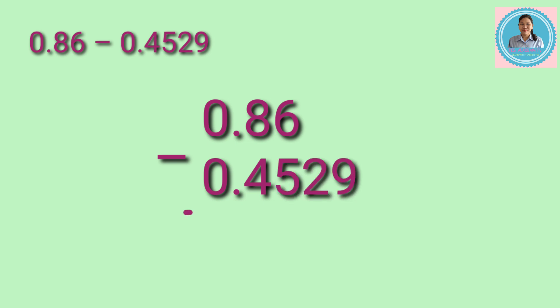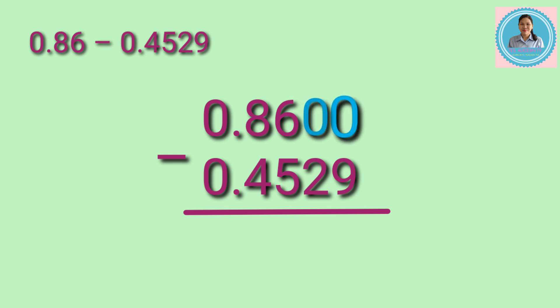First step: let's arrange the minuend and the subtrahend in columns, aligning the decimal point and the digits according to their place value. As you can see, there are only two decimal places in the minuend and there are four decimal places in the subtrahend. We need to add zeros as placeholders to make the decimal places of the minuend and the subtrahend equal before we can subtract. Let's add two zeros to the minuend.